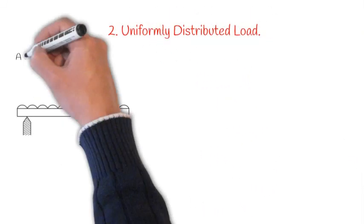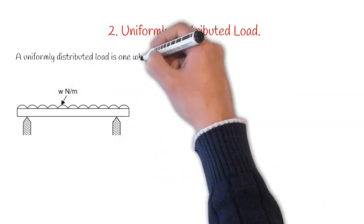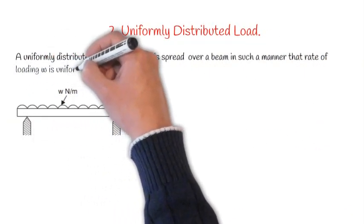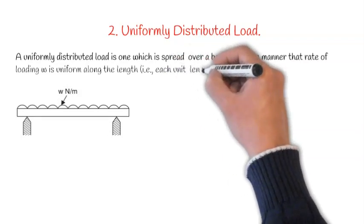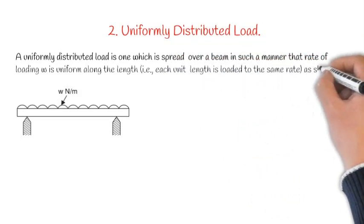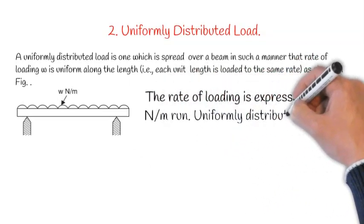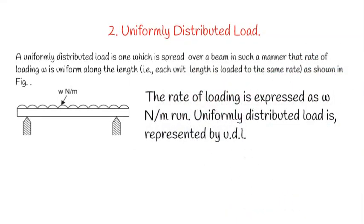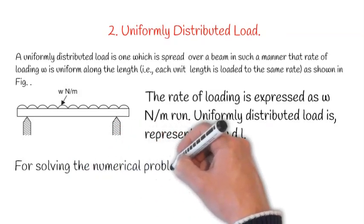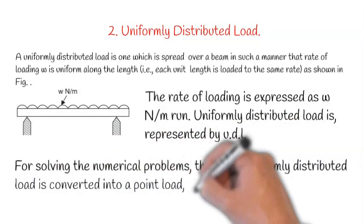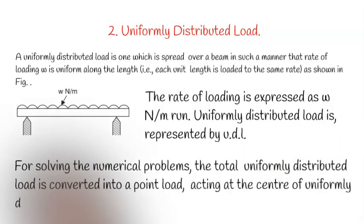2. Uniformly Distributed Load: As shown in figure, a uniformly distributed load is one which is spread over a beam in such a manner that the rate of loading W is uniform along the length. The rate of loading is expressed as W newton per meter run. Uniformly distributed load is represented by UDL. For solving numerical problems, the total uniformly distributed load is converted into a point load acting at the center of the uniformly distributed load.